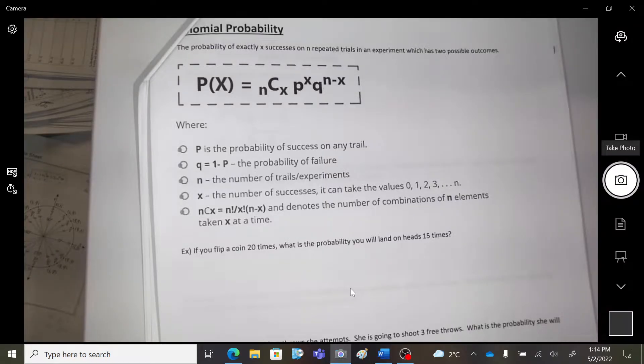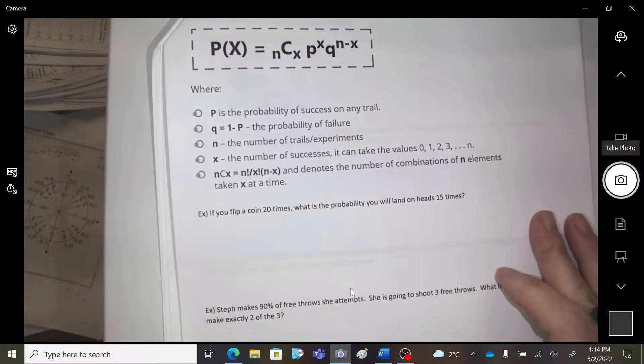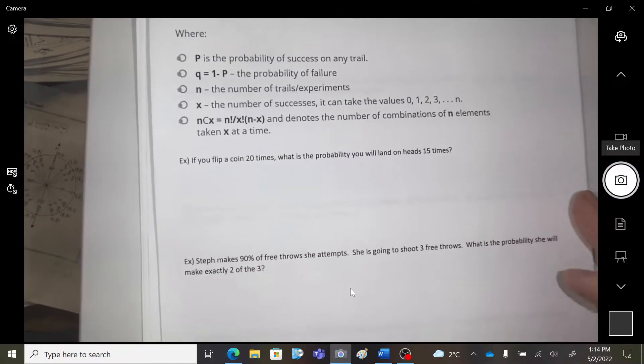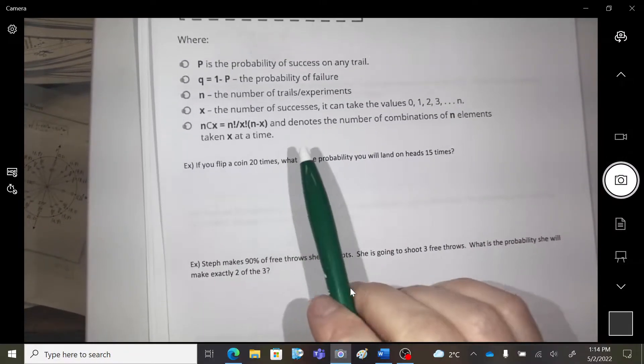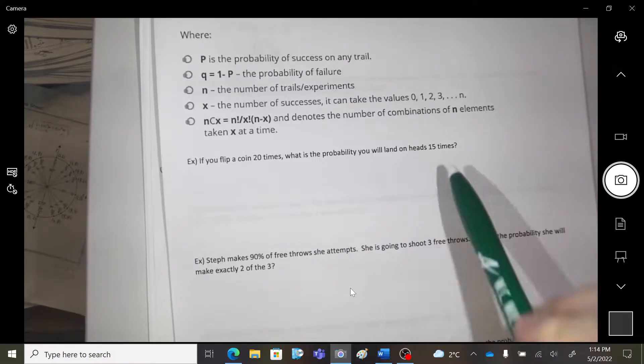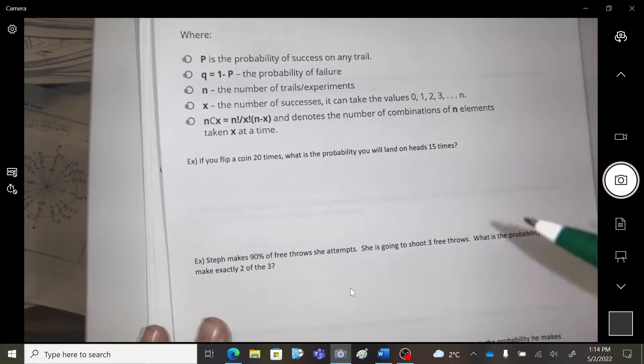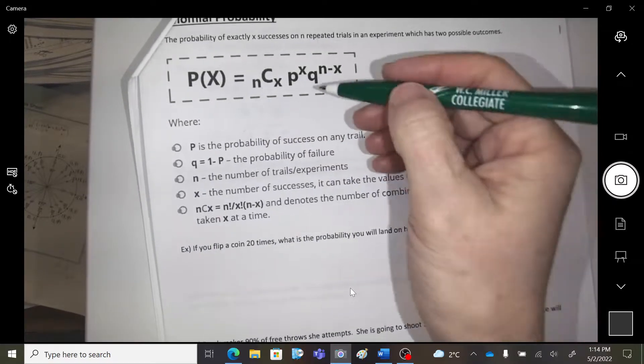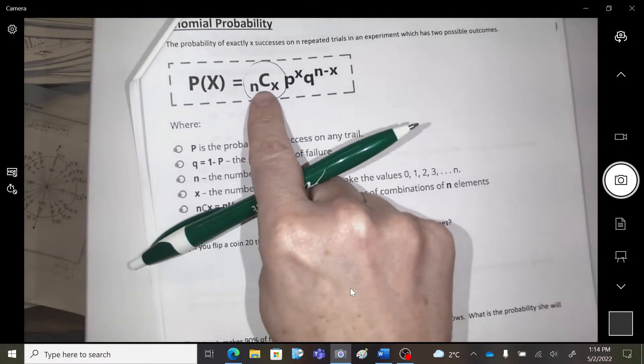So it's called Binomial Probability. Okay, so number one here, if you're going to flip a coin 20 times, what's the probability that it will land on heads exactly 15 times? Okay, so we're going to do this part of the formula, NCX.